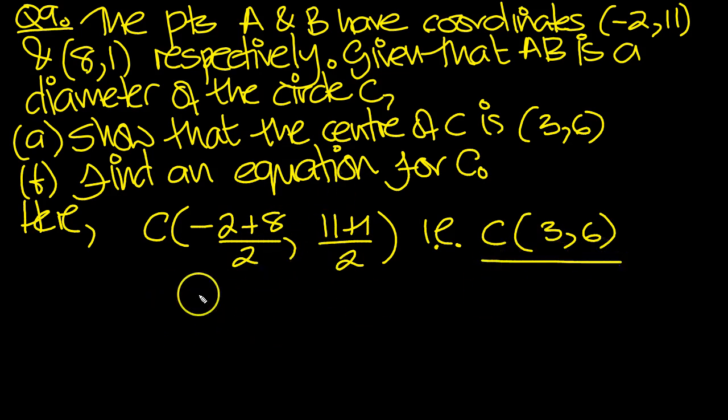Find the equation for C. We need the radius. It will equal the distance from the centre to one of these coordinates. So it will be the square root of, from 3 to 8, the increase in x is 5, so that's 5 squared. And then from 6 to 1, that's a decrease of 5, so that will also be 5 squared.